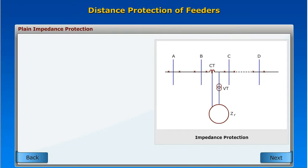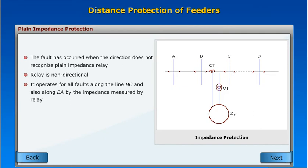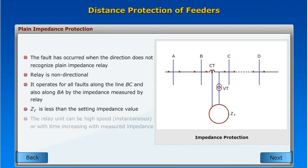Plane impedance protection. The plane impedance relay is non-directional, meaning it does not recognize fault direction. It operates for all faults along the line BC and also along line PA, where the impedance ZR measured by the relay is less than the setting impedance value. The relay unit can be high-speed instantaneous or operate with time increasing with measured impedance.